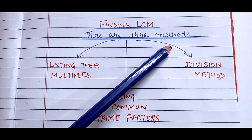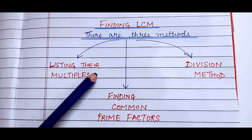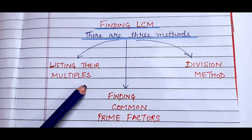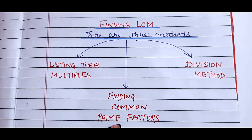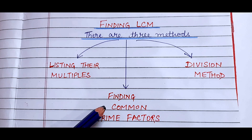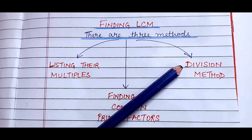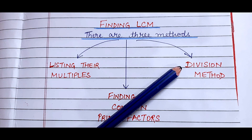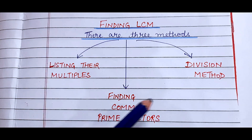There are three methods of finding LCM. First one is listing their multiples — we can find the LCM by listing the multiples of the given numbers. The second one is finding common prime factors, which means we have to find out the common prime factors of the given numbers. And the third method is the division method. We have already discussed the division method in HCF also, but the method is obviously different here. So these are the three methods.